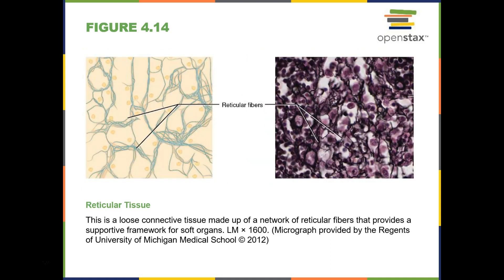Then we have reticular connective tissue. Reticular connective tissue is composed of fibroblasts that produce reticular fibers. Reticular fibers provide framework for some of our organs, specifically our lymphatic organs like our spleen, thymus, and lymph nodes. There's going to be a great blood supply to reticular connective tissue, and there are always fat cells associated with it as well.